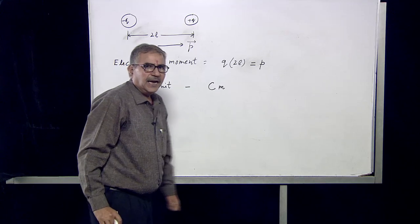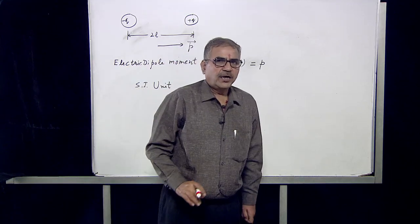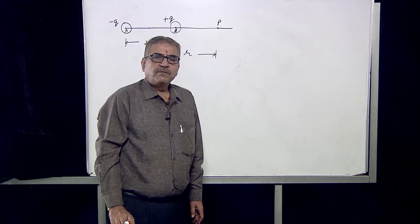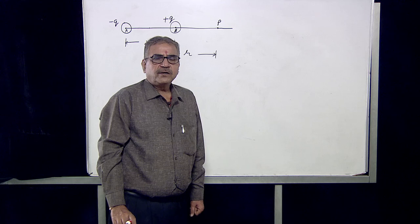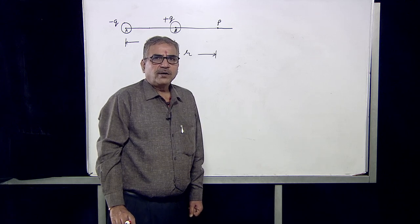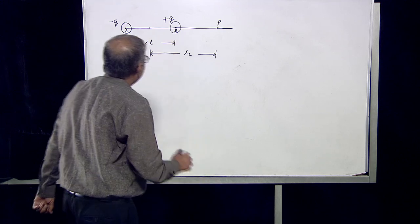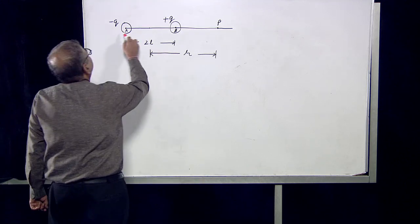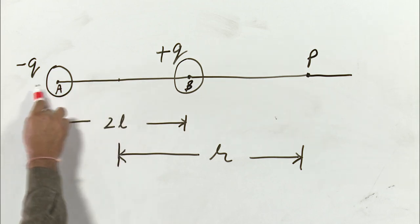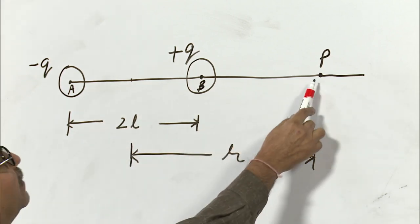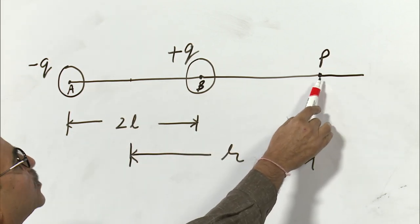Let us calculate the electric field due to the electric dipole in two special cases. First, we will take the case when the point is on the axial line of the dipole. Here, this is the electric dipole — charge minus Q is here, charge plus Q is here. They are separated by small distance 2L and the point P is where the electric field is to be found.